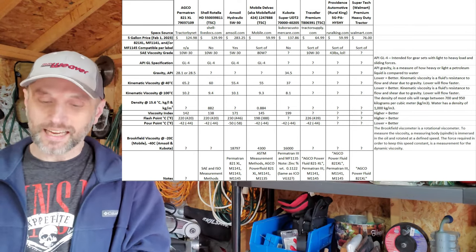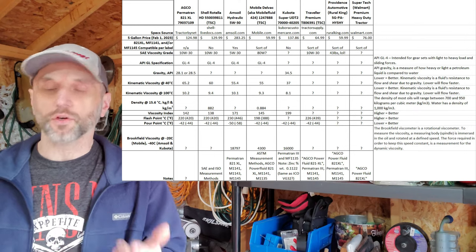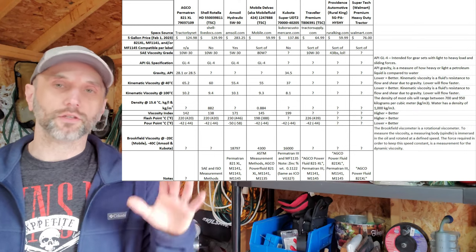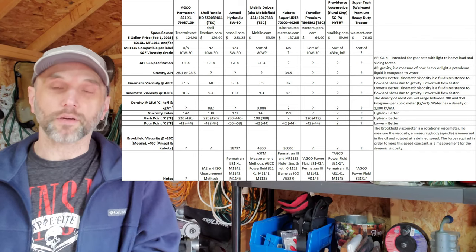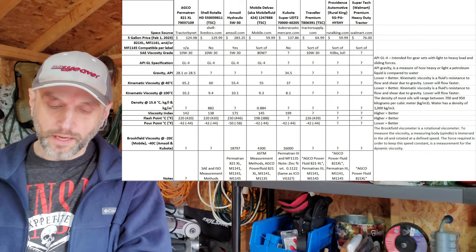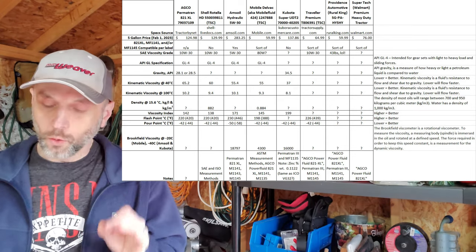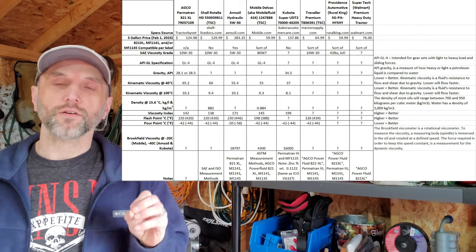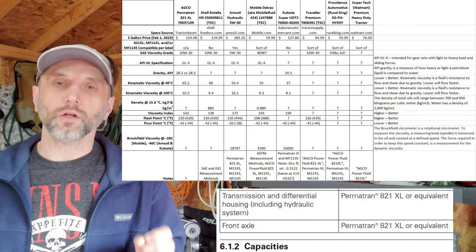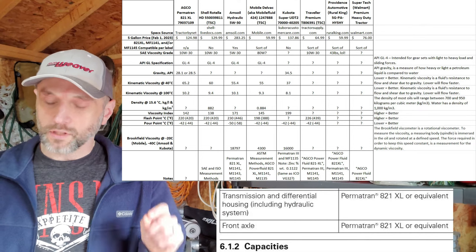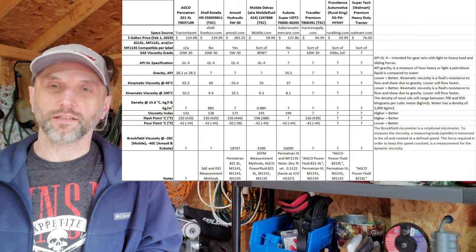This is all from the Massey perspective. If you're a Kubota or other tractor owner, it's not exactly geared for you, but the specs are still applicable. From an AGCO perspective, the first question is: have you found an equivalent to AGCO fluid? The manual says Permatran 821XL or equivalent. From a specifications breakdown perspective, none of these products are truly equivalent to 821XL.